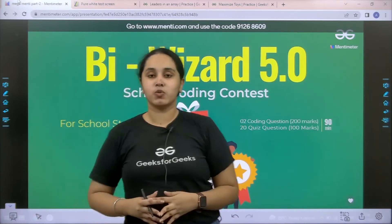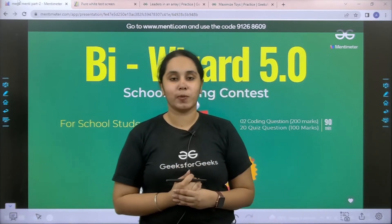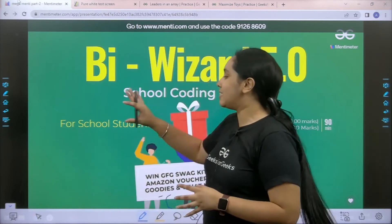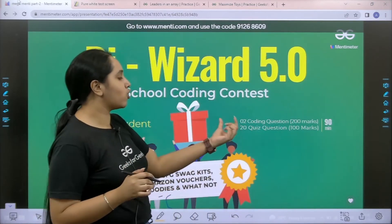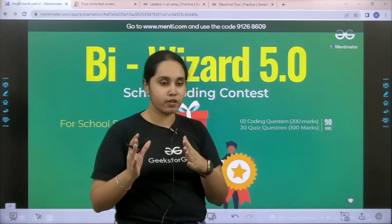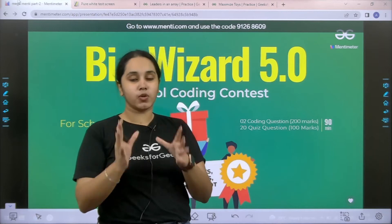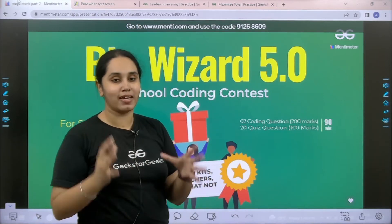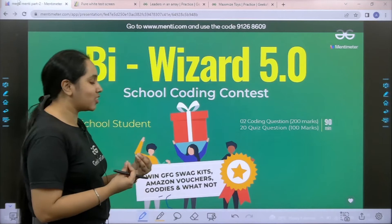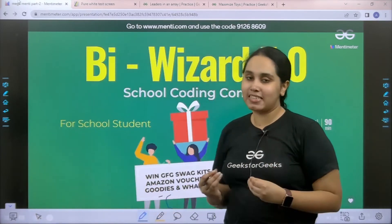Bivisit Tournament 5.0 is just around the corner on 26th July from 6pm to 7:30pm and it is exclusively for school students. You just need to solve two coding questions that are of 200 marks and 20 quiz questions that are of 100 marks. In total you have one and a half hours to solve the entire question set and this is a chance to showcase your coding skills and knowledge and win exciting prizes.